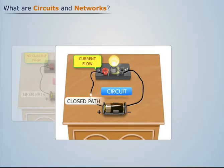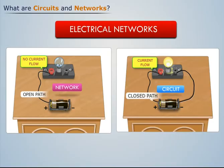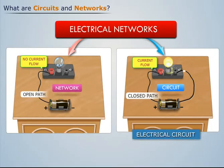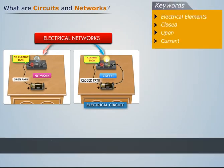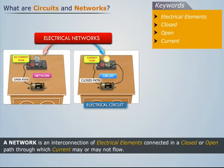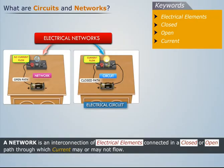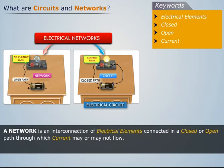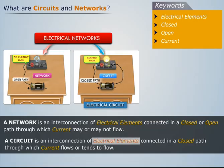Here, both configurations are electrical networks, but only the second configuration is an electrical circuit. Thus, a network is an interconnection of electrical elements connected in a closed or open path through which current may or may not flow, whereas a circuit is an interconnection of electrical elements connected in a closed path through which current flows or tends to flow.